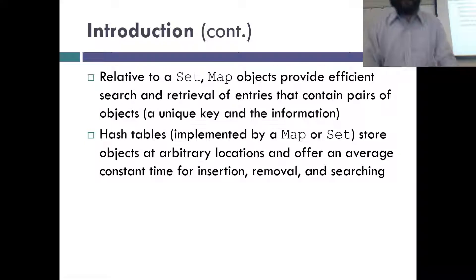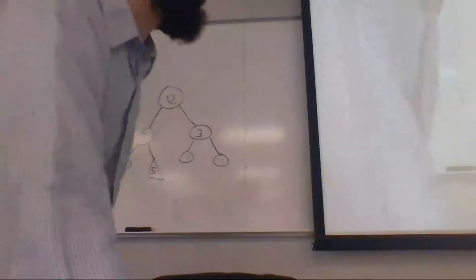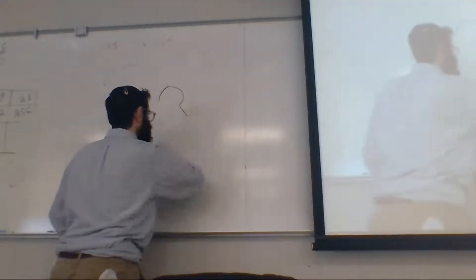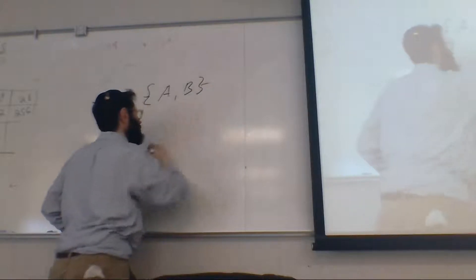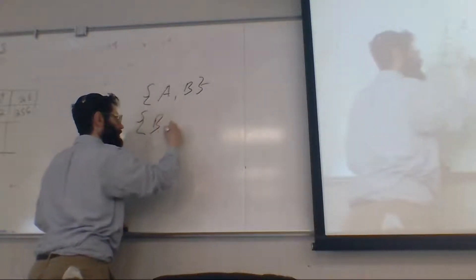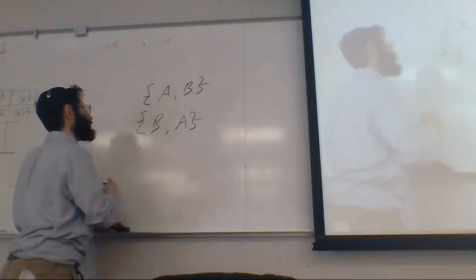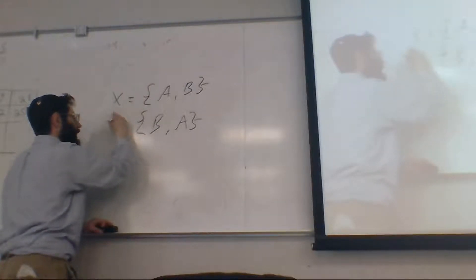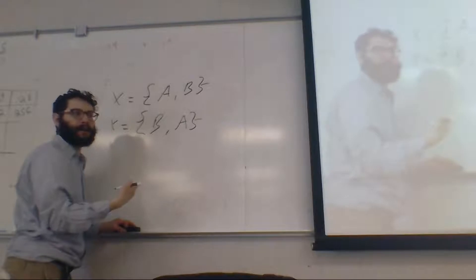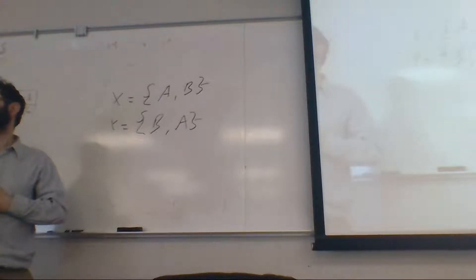Sets are these mathematical collections. There's an abstract Set interface, and you can use either a HashSet or a TreeSet. Sets have the property that order doesn't matter: set X = {A, B} and set Y = {B, A} are the same set because they have the same content. If set Z = {C, D}, then X union Z = {A, B, C, D} — in whatever order, since sets don't care about order.